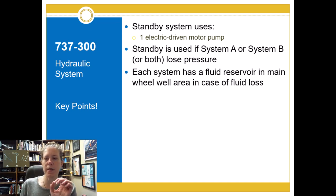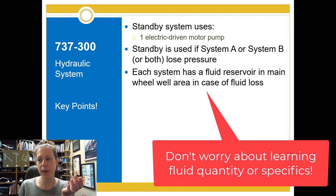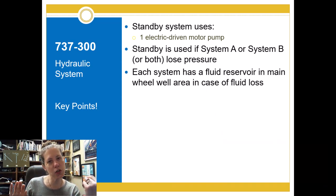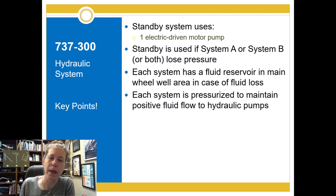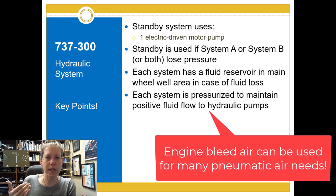Now, each of these three hydraulic systems has got a fluid reservoir that is found in the main wheel well area. And it has the ability to have this reservoir. So if we have some fluid loss, there still should be some available in that reservoir. And the system has to be pressurized. We pressurize that system using pneumatic bleed air.